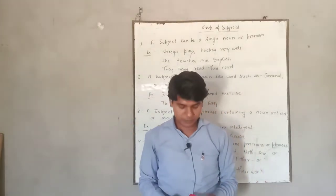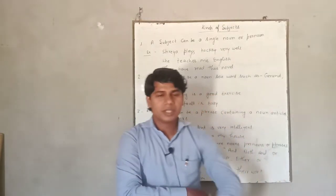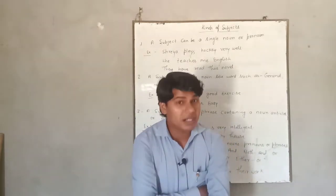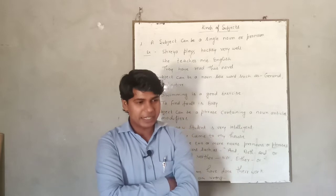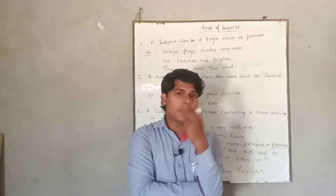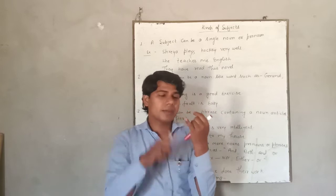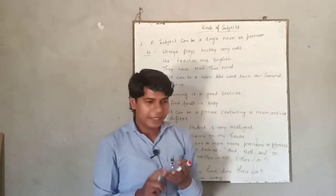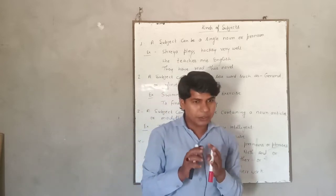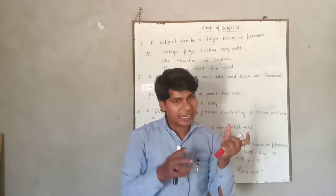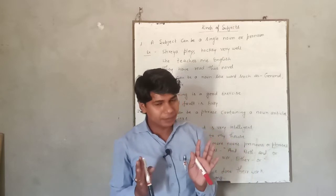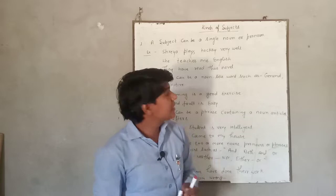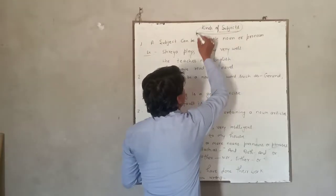Hello students, how are you? I hope you are fine. In the last class, I have taught you about the parts of a sentence. As we know, there are two parts of a sentence: the first one is the subject and the second one is the predicate. I told you how to find the subject and predicate. Today, we will discuss about the kinds of subjects.